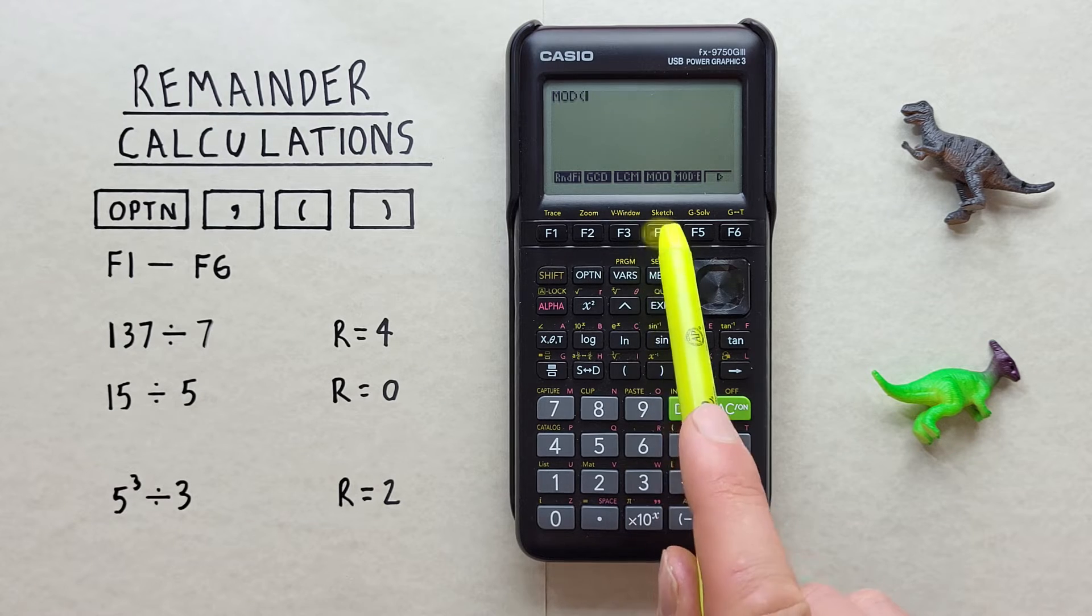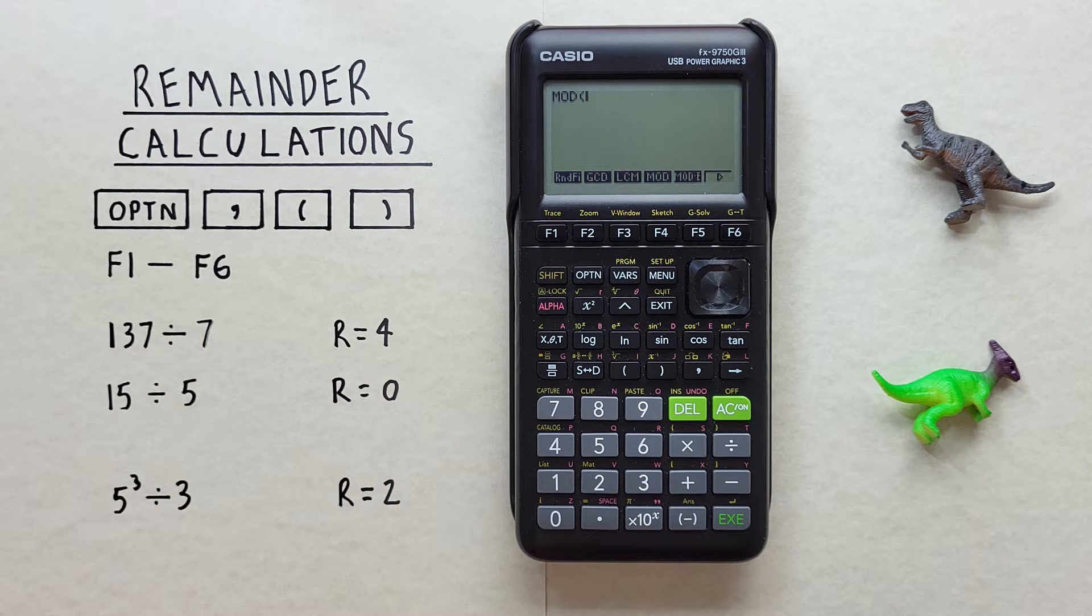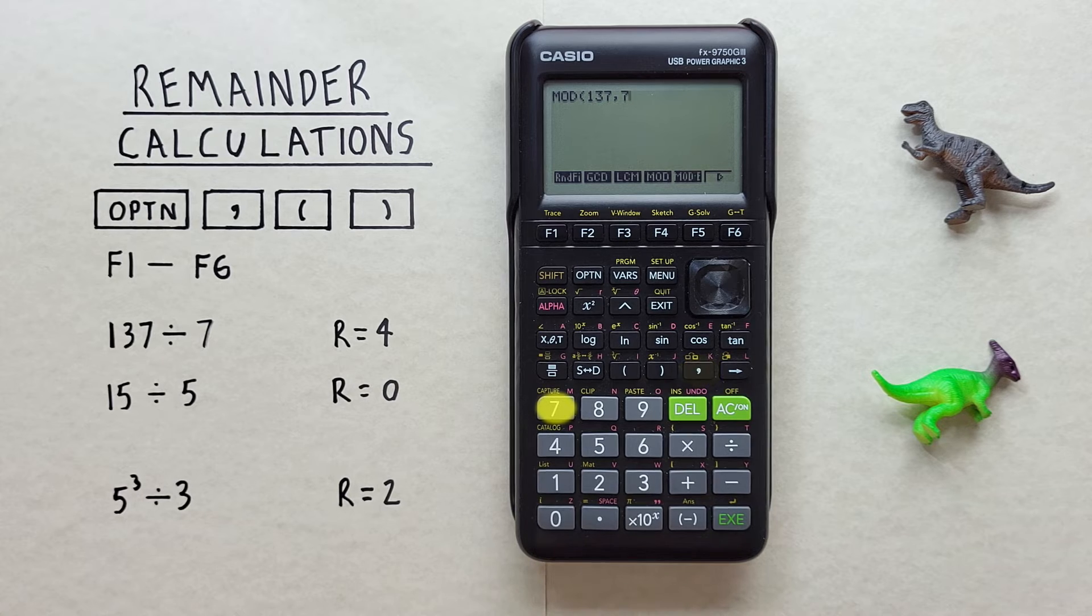So if we hit that, we now see mod on our screen with an open bracket. We can go ahead and enter our 137, comma, 7, and then close our bracket and hit exe.